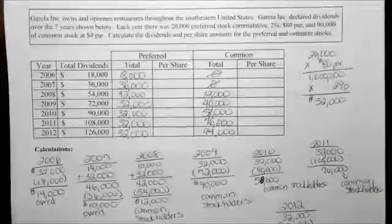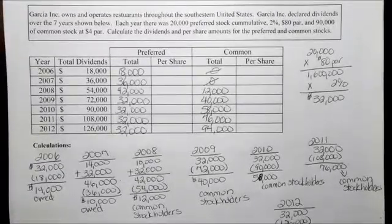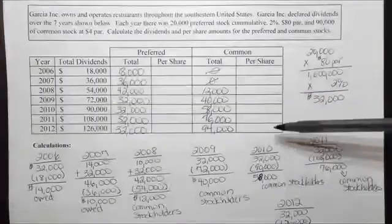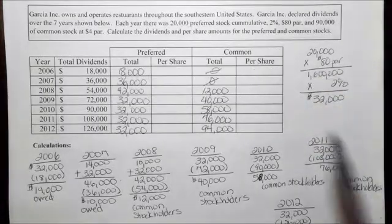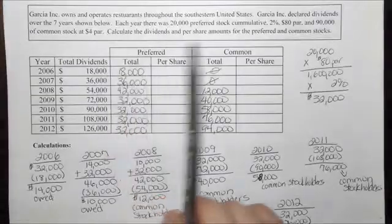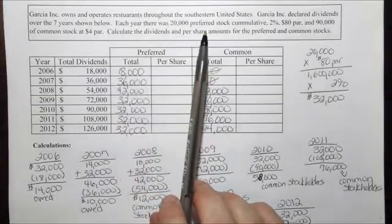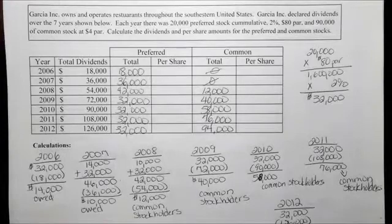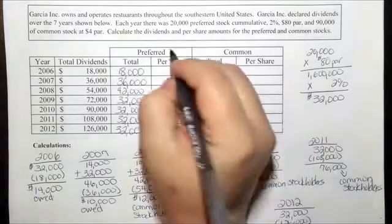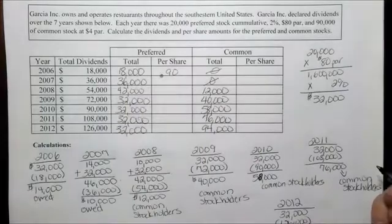Now we need to determine what the per share amount is for the actual stock. In 2006, there were 20,000 preferred cumulative shares and $18,000 was paid out in dividends. So we take $18,000 divided by 20,000 shares — in 2006 each preferred cumulative share was worth $0.90, and common stockholders received $0.00 per share.